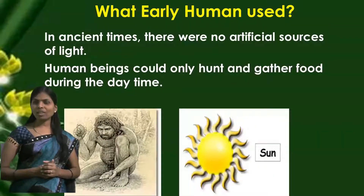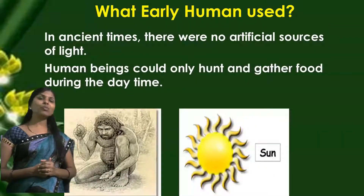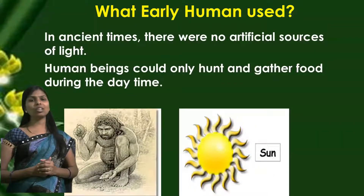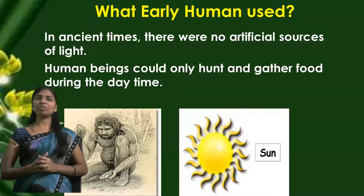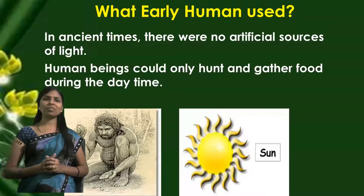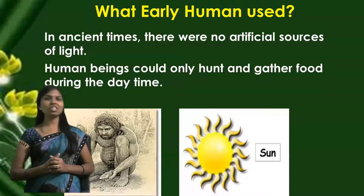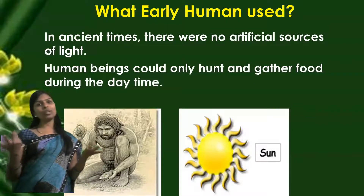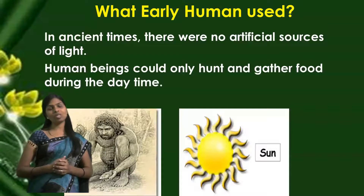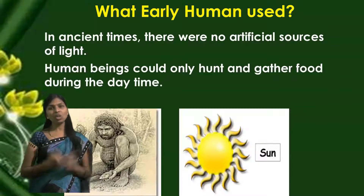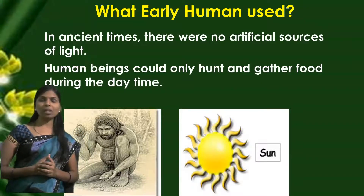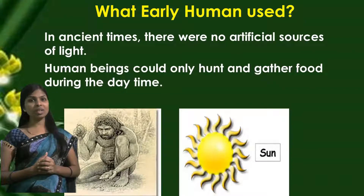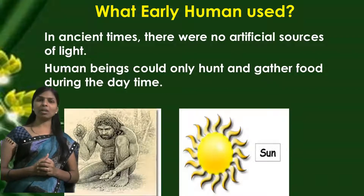So in this video, we are going to learn what early humans used. In ancient times, there were no artificial sources of light. There was no electricity, no bulb, and no CFL or LED bulb.